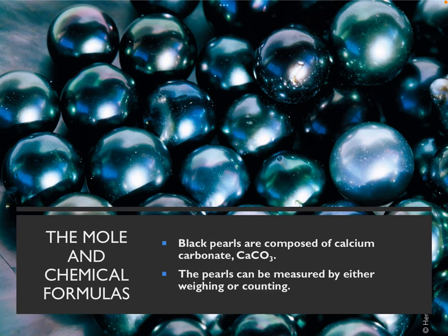Hi everyone! Welcome to part 3 of chapter 5. Today, we're going to take what we've learned about the mole and molar mass and apply it to some new types of problems. First, we're going to learn how to calculate the percentage composition of compounds from both experimental and theoretical data. We'll also learn how to calculate the percentage composition of hydrates. The second half of our lecture will be on calculating the empirical and molecular formulas of compounds. This is really important for elemental analysis of unknown compounds. Lots to cover today, so let's get going!